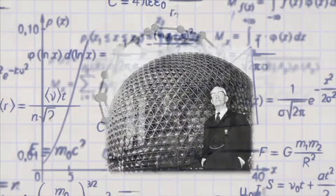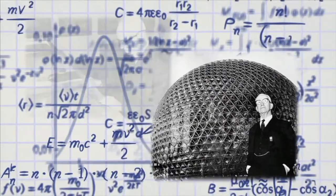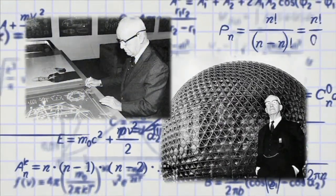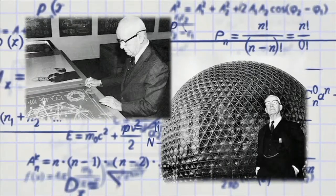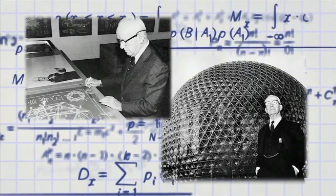The buckyball earned its name due to the fact that it has the same soccer ball shape of pentagons and hexagons as the geodesic dome designed by Buckminster Fuller in the late 1940s.